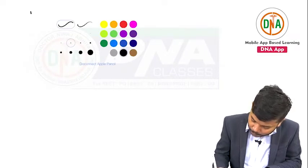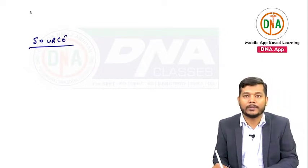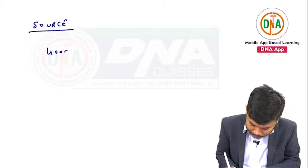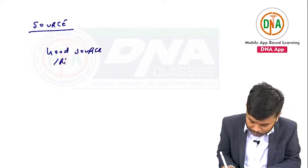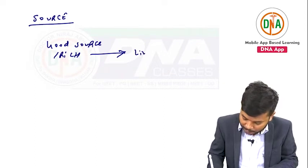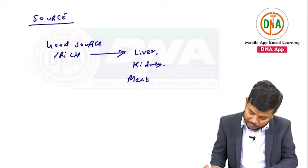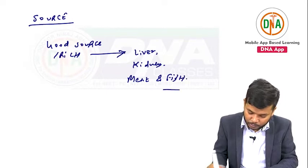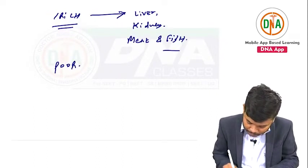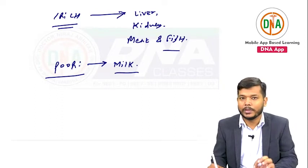Now the interesting part — the source of vitamin B3 — is important from a PSM point of view. The rich sources of vitamin B3 (niacin) are liver, kidney, meat, and fish. The poor source is milk.